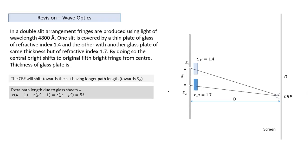What is the extra path length due to the glass sheets? We calculate the extra path length from one sheet minus the extra path length from the other to get the difference. This gives t times mu minus 1, minus t times mu dash minus 1, which simplifies to t times mu minus mu dash.